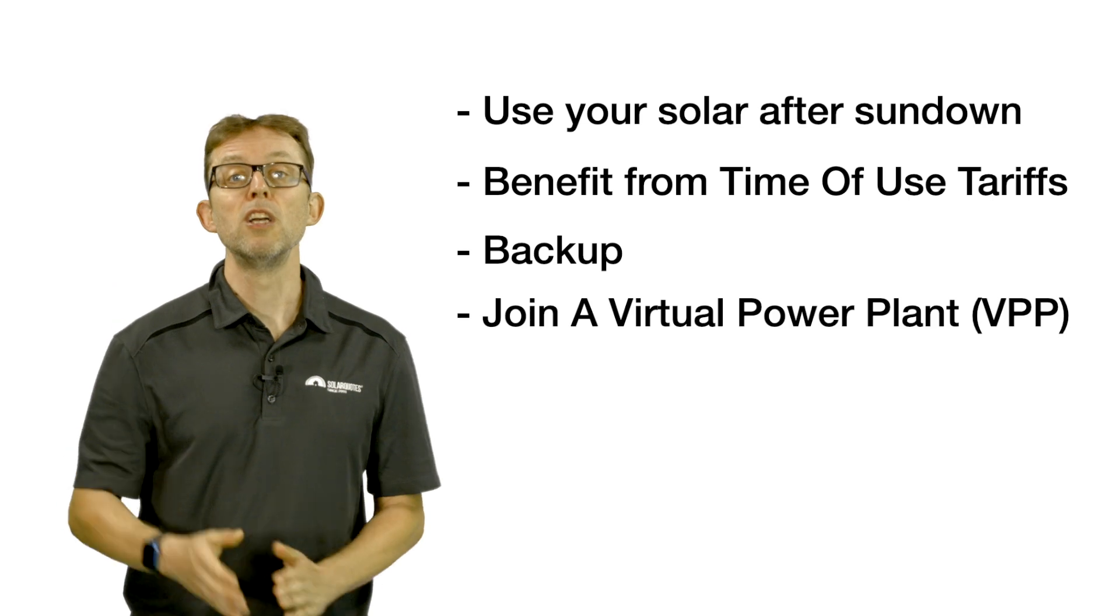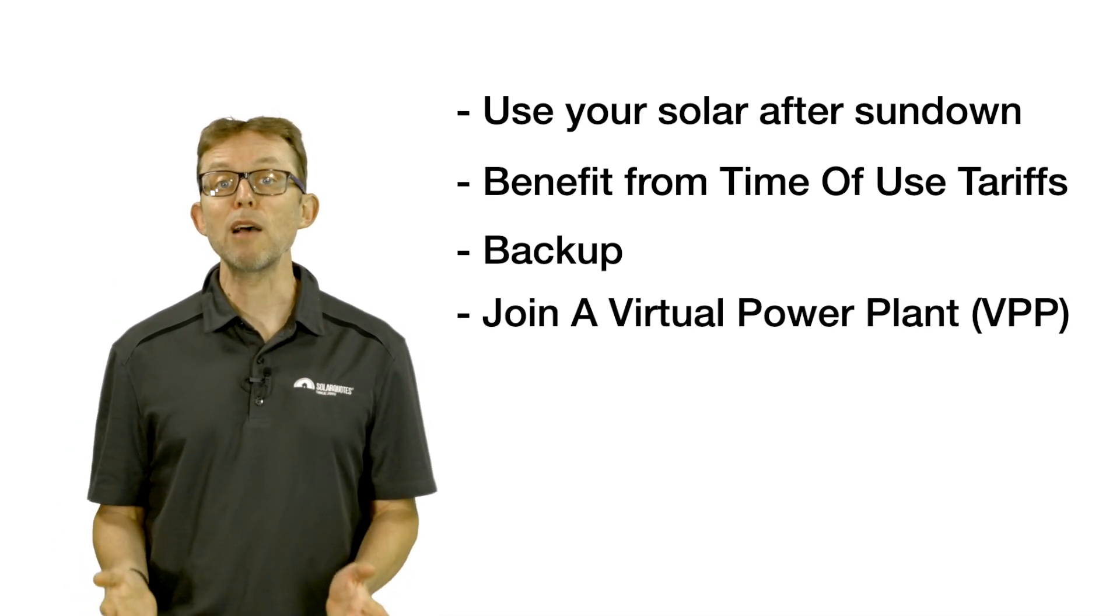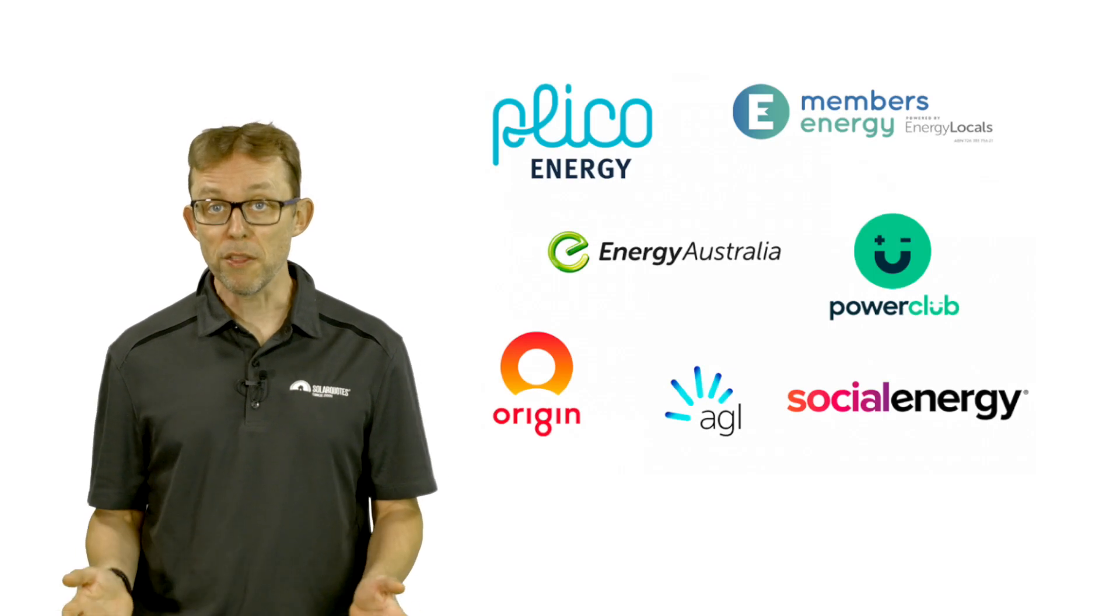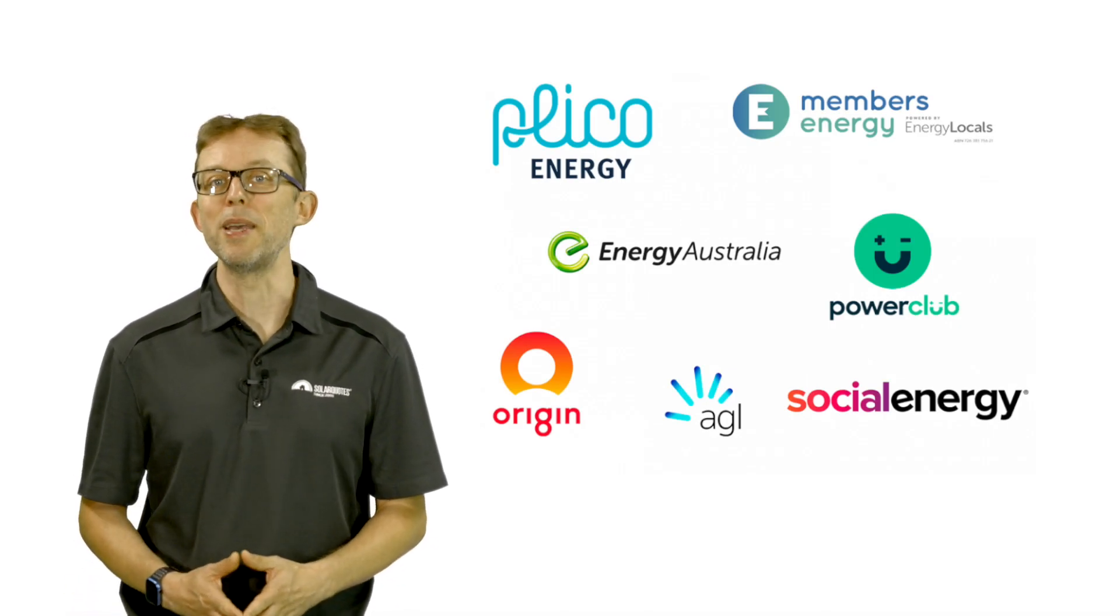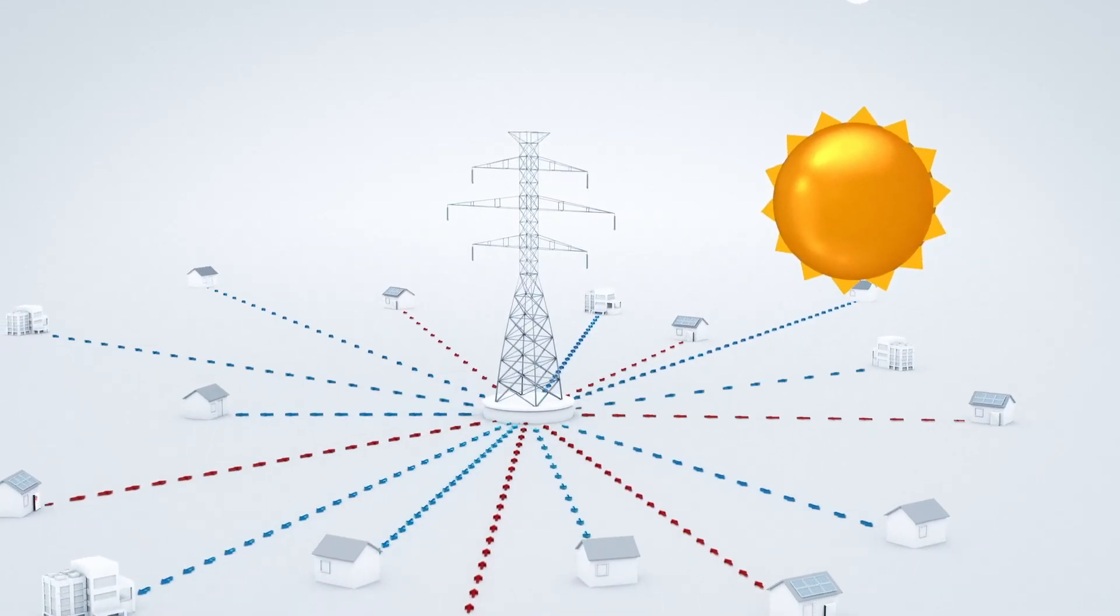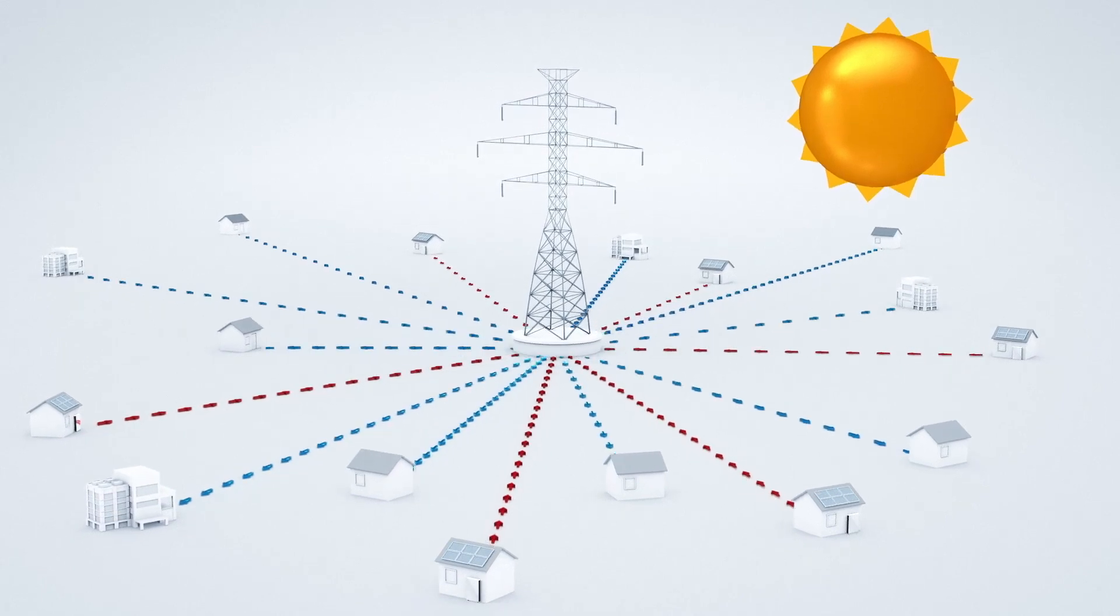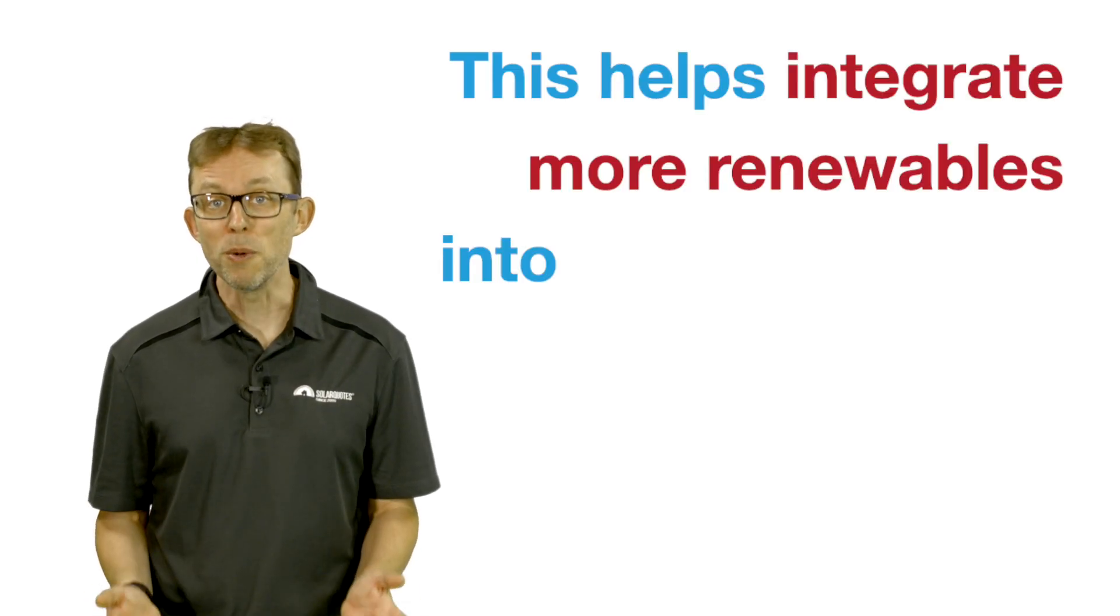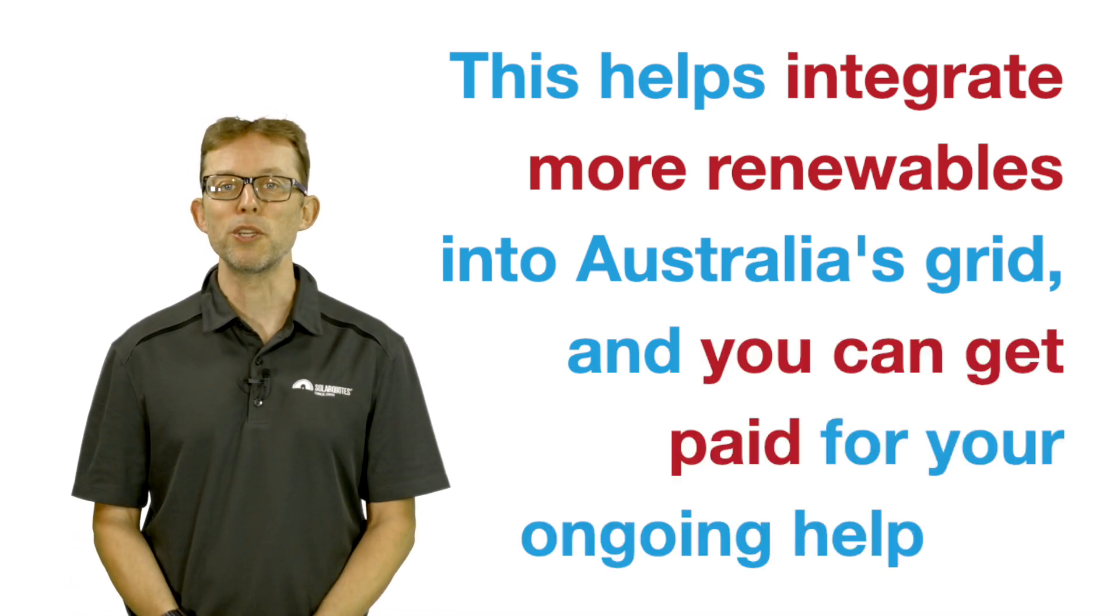Reason four, join a virtual power plant. Owning a battery allows you to join a virtual network of other battery owners called a virtual power plant or VPP. Together you can use your combined battery capacity to support the grid by charging and discharging when the grid needs support. This helps integrate more renewables into Australia's grid and you can get paid for your ongoing help too.